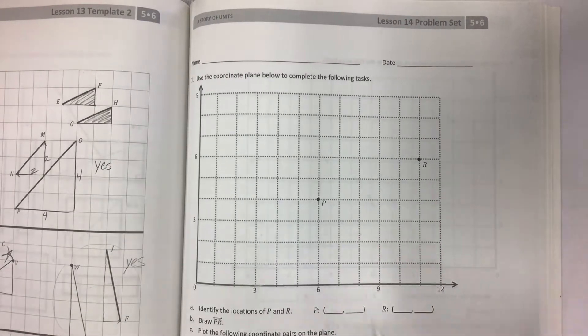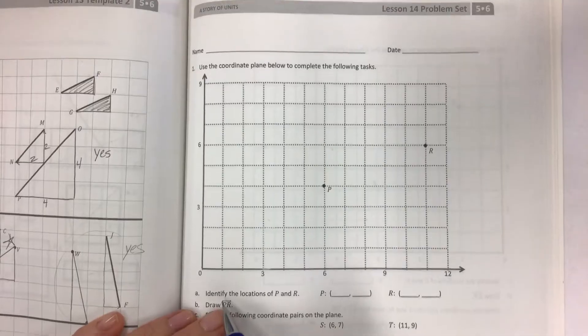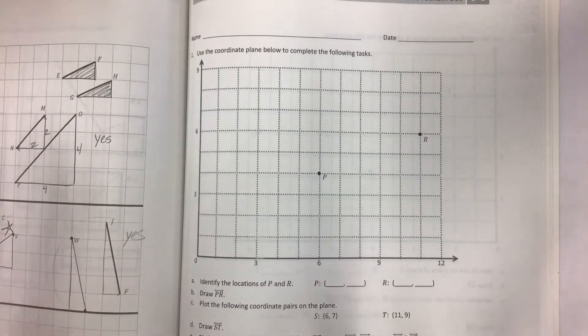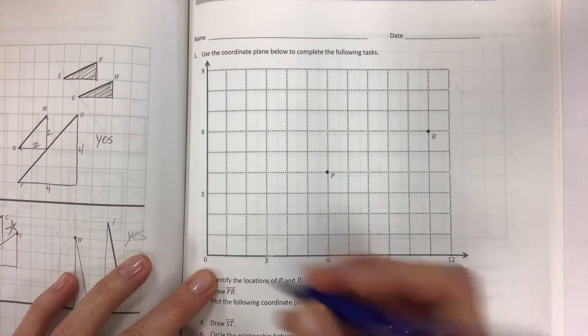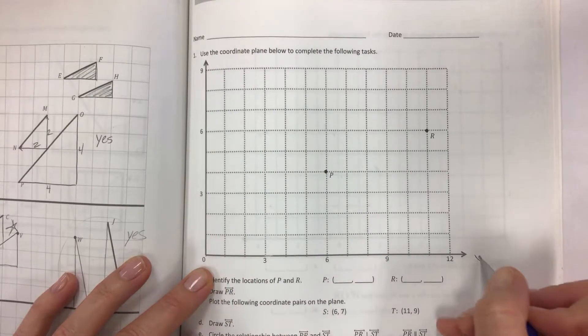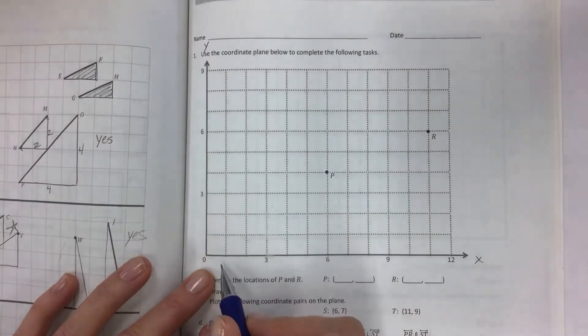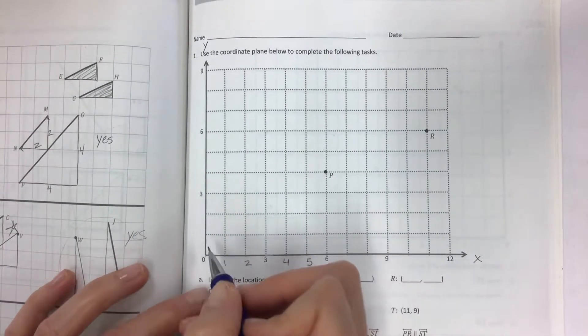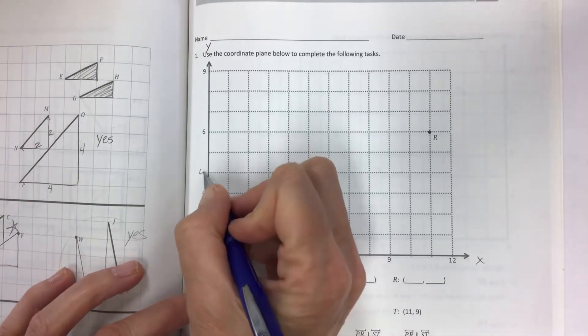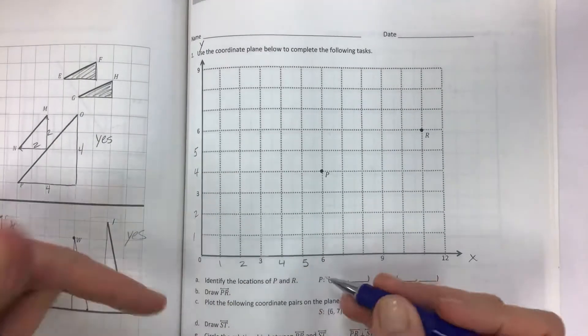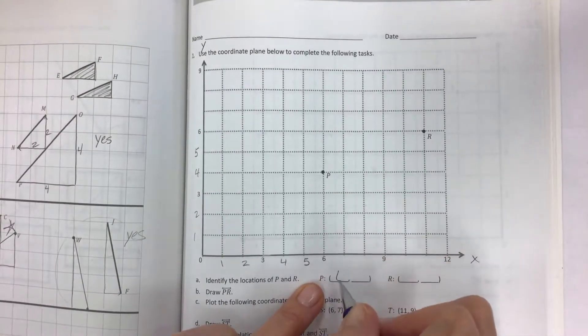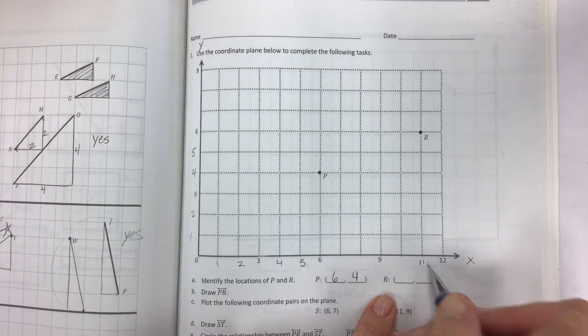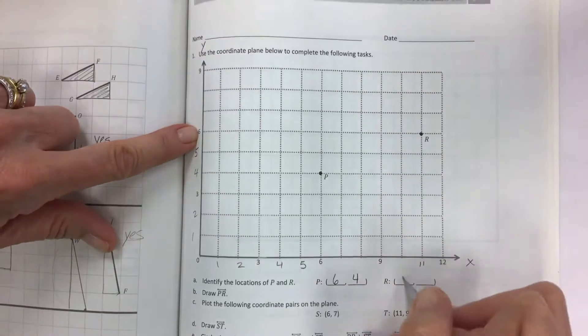Use the coordinate plane below to complete the following tasks. A. Identify the locations of P and R. At this point this should be very easy for you. All of our numbers are positive—they're going from the origin to the right for the x-axis and up for the y-axis. Looks like we're counting by ones. Always look and see what you're counting by because in order to put your ordered pair you have to count off to the right and then up. So for point P we have 6 for x and we have 4 for y. And for R we have down here counting by ones, 11 for x and 6 for y.